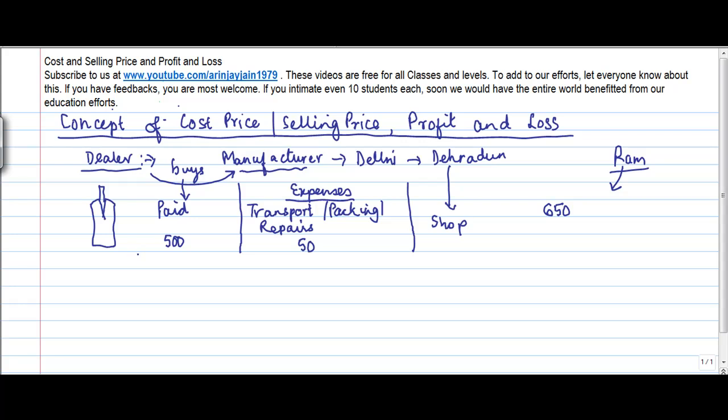Now why am I explaining this chain to you? Because this is the way a normal transaction, a purchase sale transaction works. Now the concept of cost and selling price and profit and loss are more from the perspective of the dealer. I mean in this particular example it could be for anyone else as well, but in this example the concept of cost, selling price, profit and loss is from a perspective of dealer.